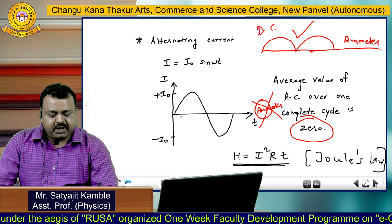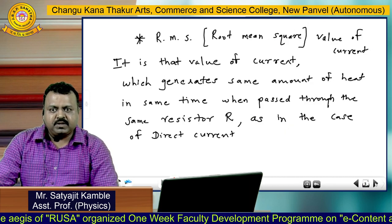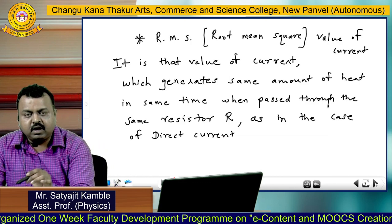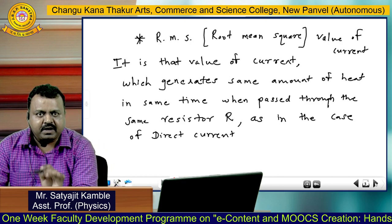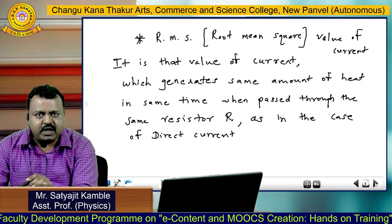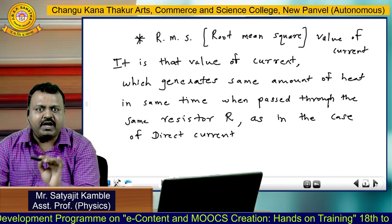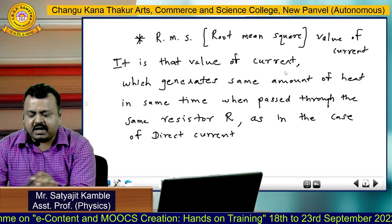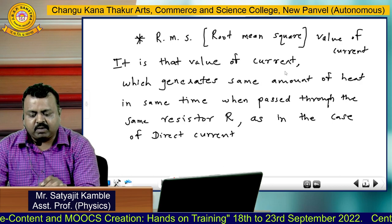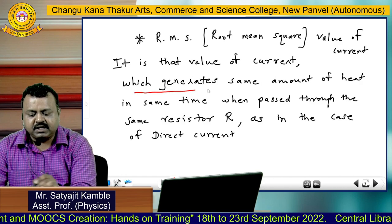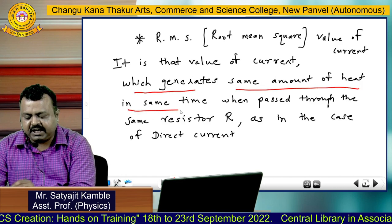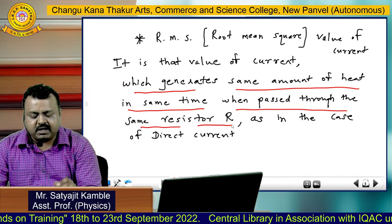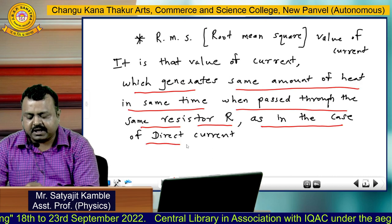Therefore, there is one important term you should know, and that term is called the RMS value of current. RMS stands for root mean square. This RMS value is nothing but a measured value of current. Here is the definition: RMS value of current is that value of current which generates the same amount of heat in the same time when passed through the same resistance R as in the case of direct current.